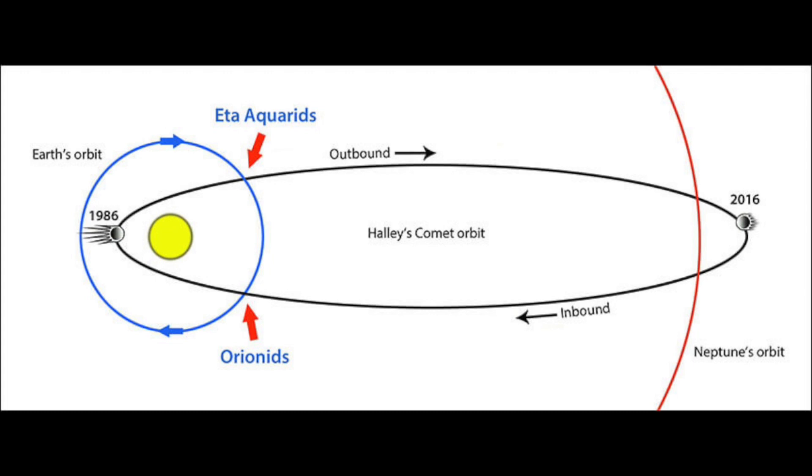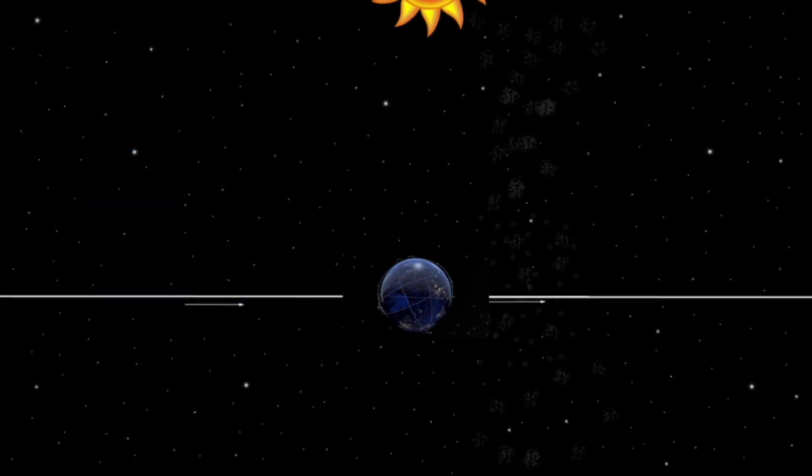You may ask, but where does this have anything to do with the globe Earth? As you can see, as the Earth plows through these clouds head-on in its orbit around the Sun, only the forward-facing half of the planet is impacted by the shower. Half of the Earth is actually facing backwards and does not impact the debris.